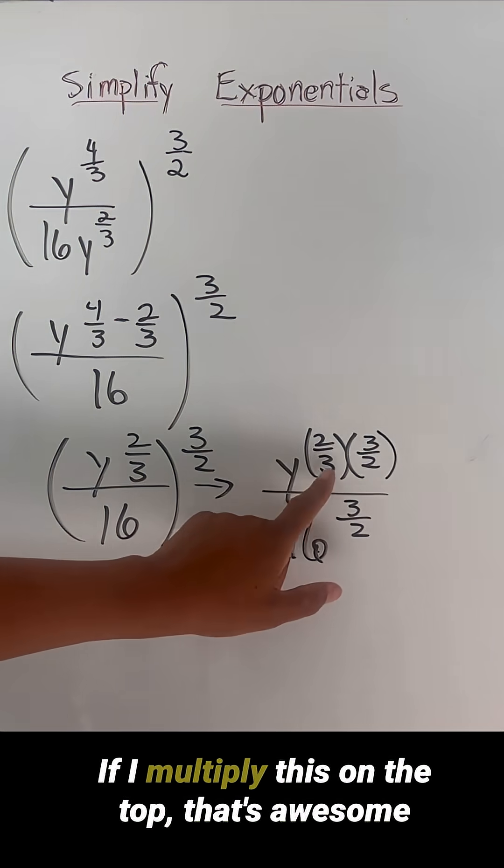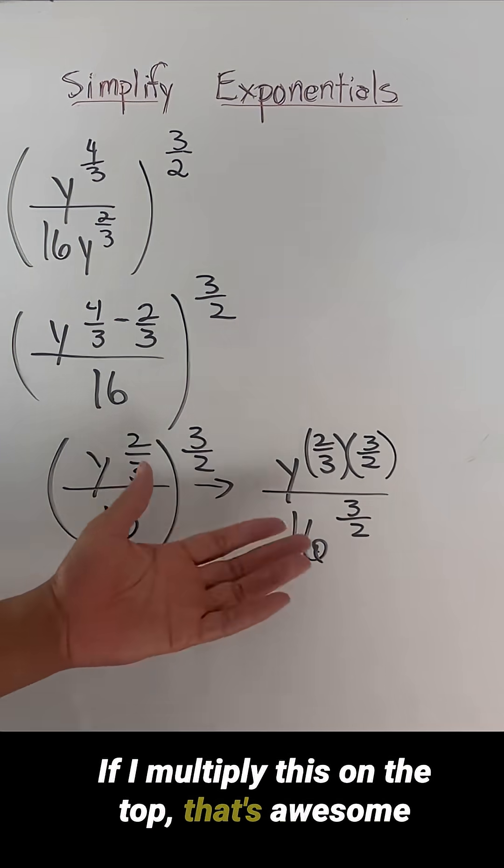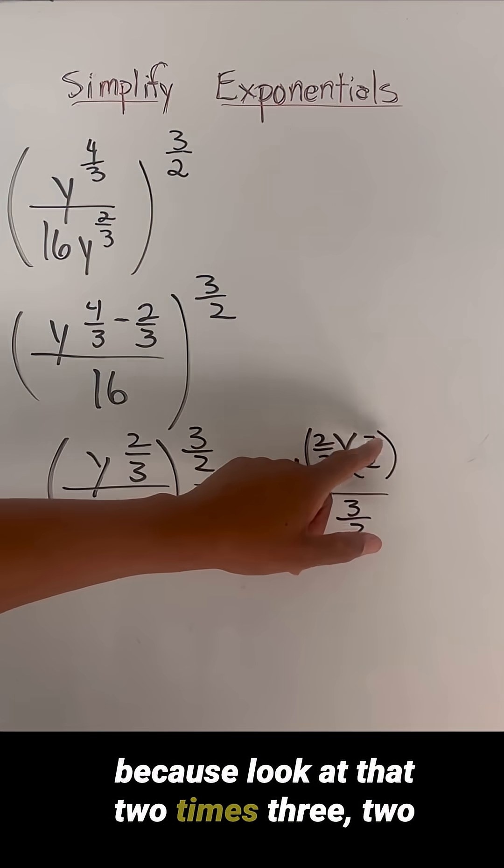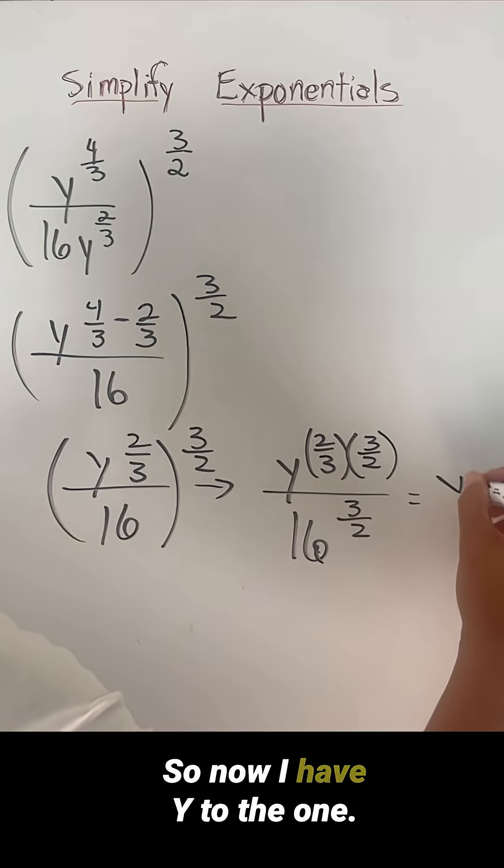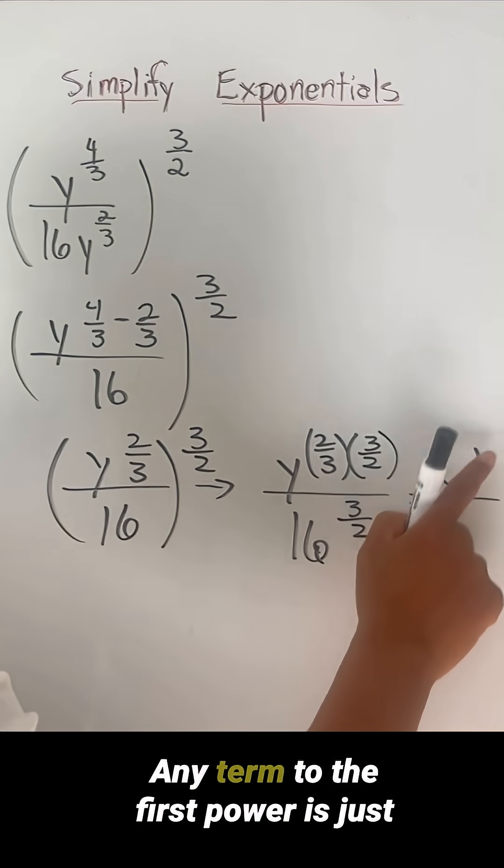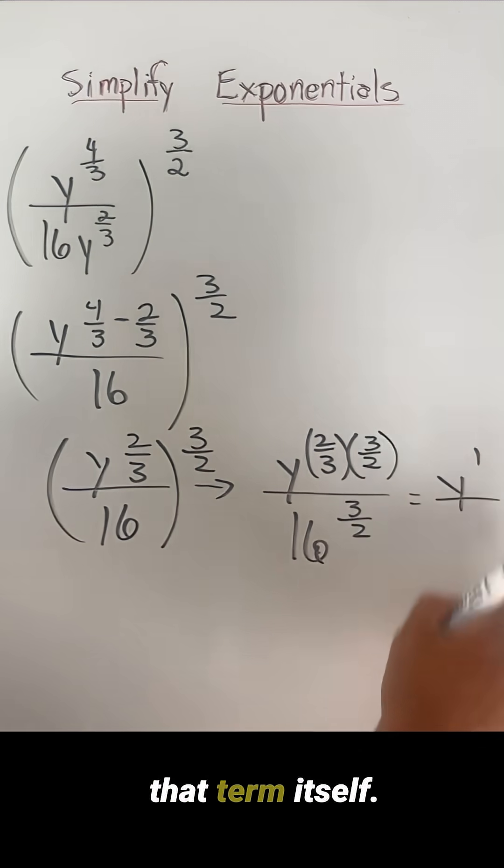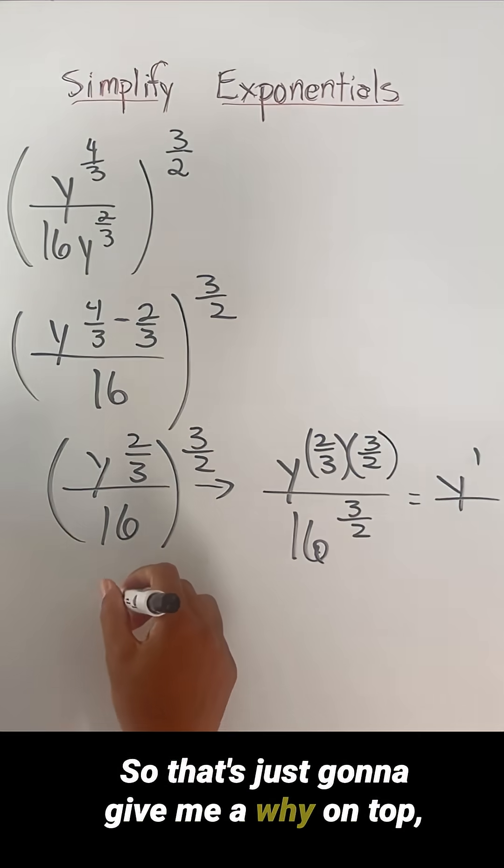Okay, so now continue. If I multiply this on the top, that's awesome because look at that. Two times three, two times three, that becomes six over six, which is just a one. So now I have y to the one. Any term to the first power is just that term itself. So that's just going to give me a y on top.